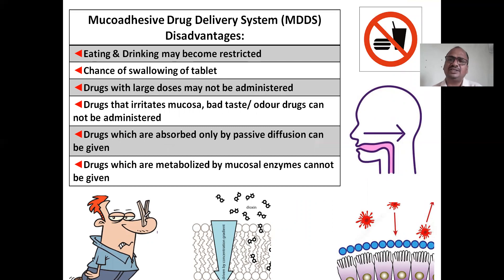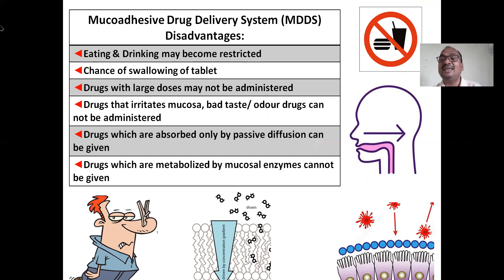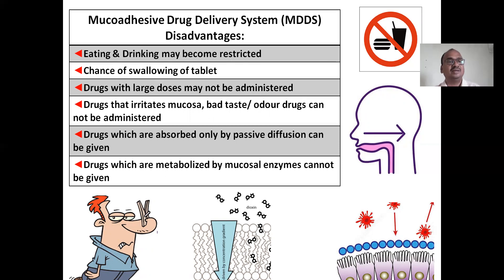Now, disadvantages. With buccal tablets, you will feel that something is there in your cheek or mouth — there is a sensation of discomfort. Because the tablet is adhered in the stomach or colon membrane, doctors may restrict eating and drinking while the formulation stays in the GIT. There is also a chance of accidentally swallowing the buccal tablet. Drugs with larger doses may not be administered this way — you cannot prepare a dose equivalent to one liter IV infusion; only small doses are possible.